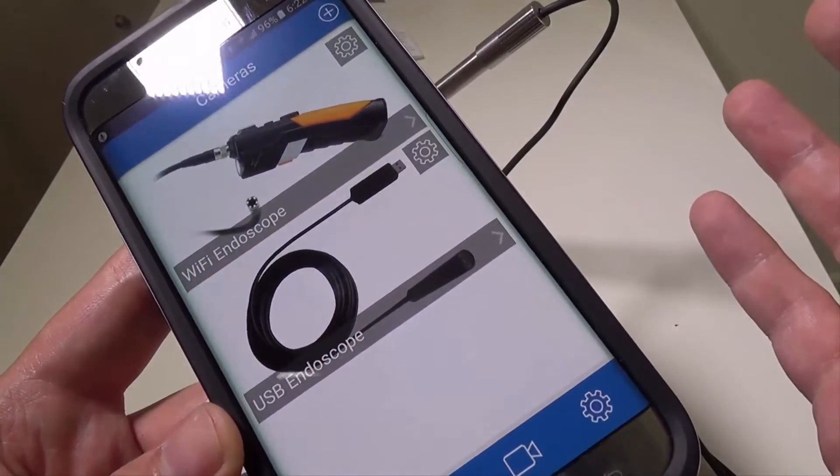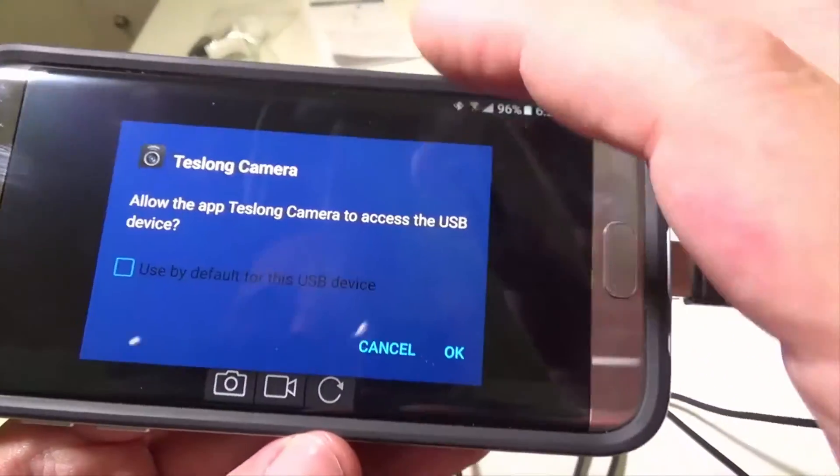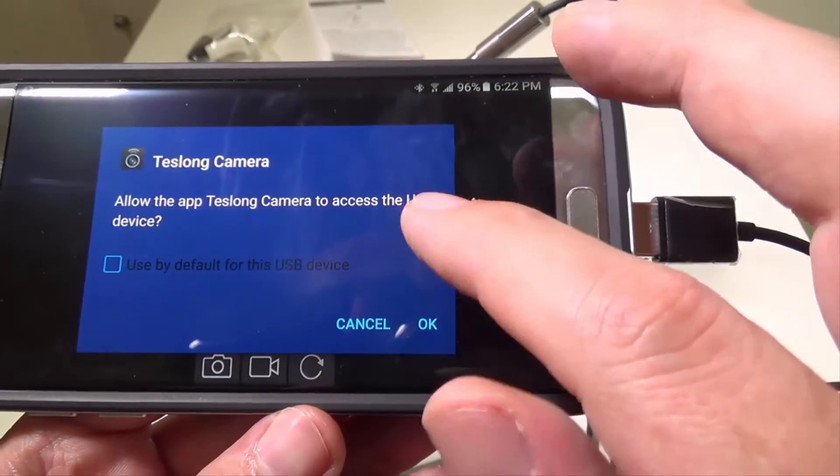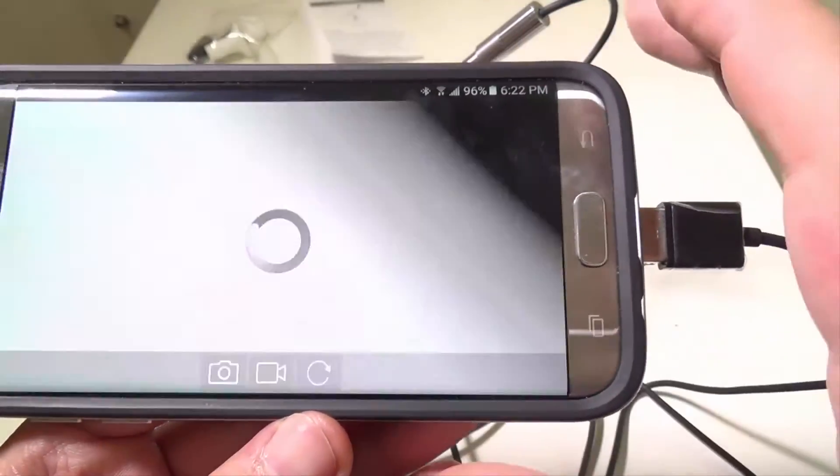But now it'll ask you whether it's a Wi-Fi endoscope because they do sell those as well or a USB endoscope. Of course I'm going to select USB endoscope and it is going to ask me if I want to allow the camera to access the USB device and I say of course.